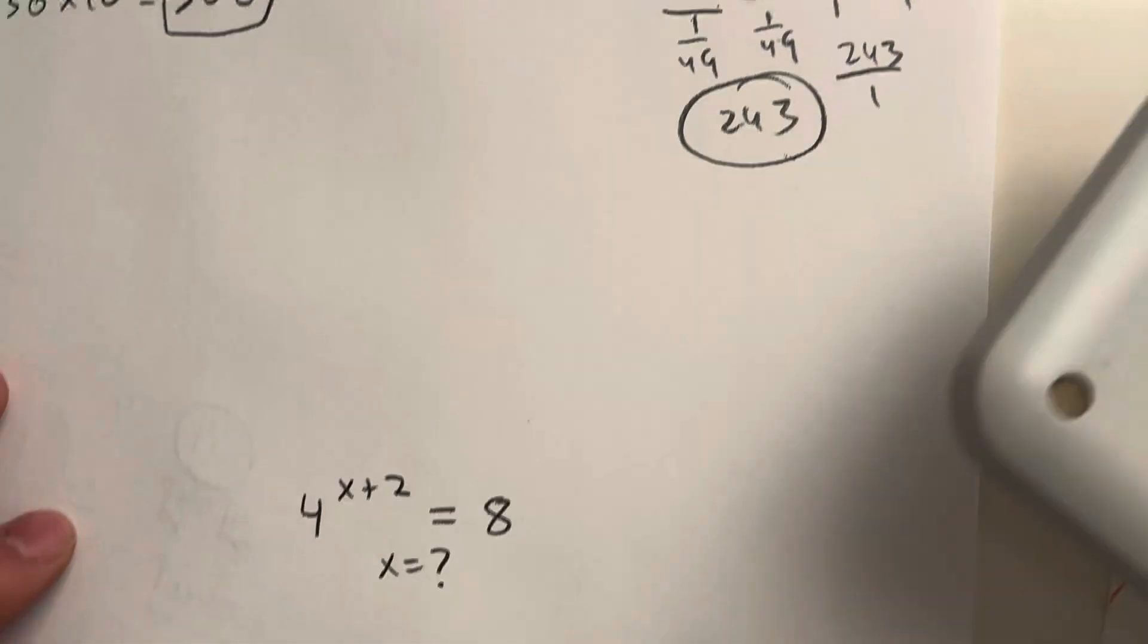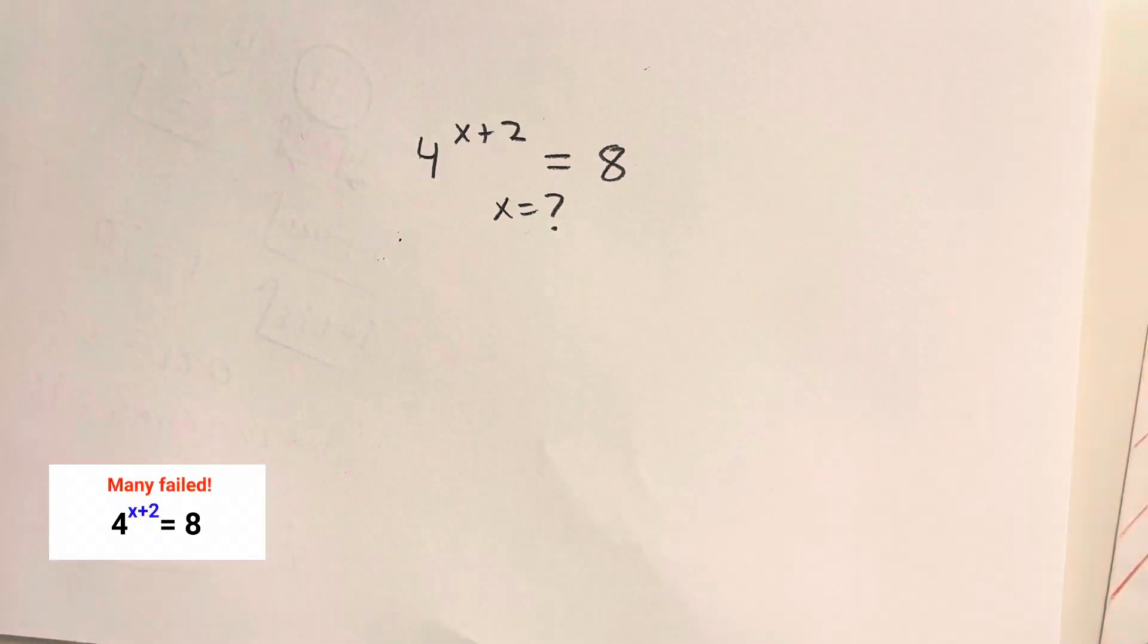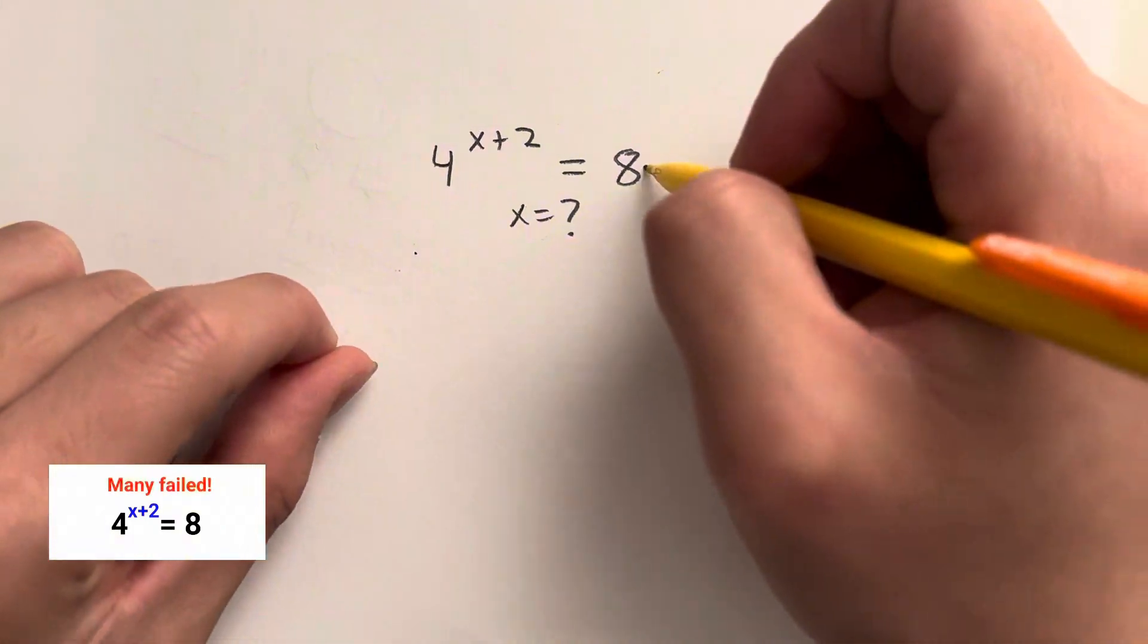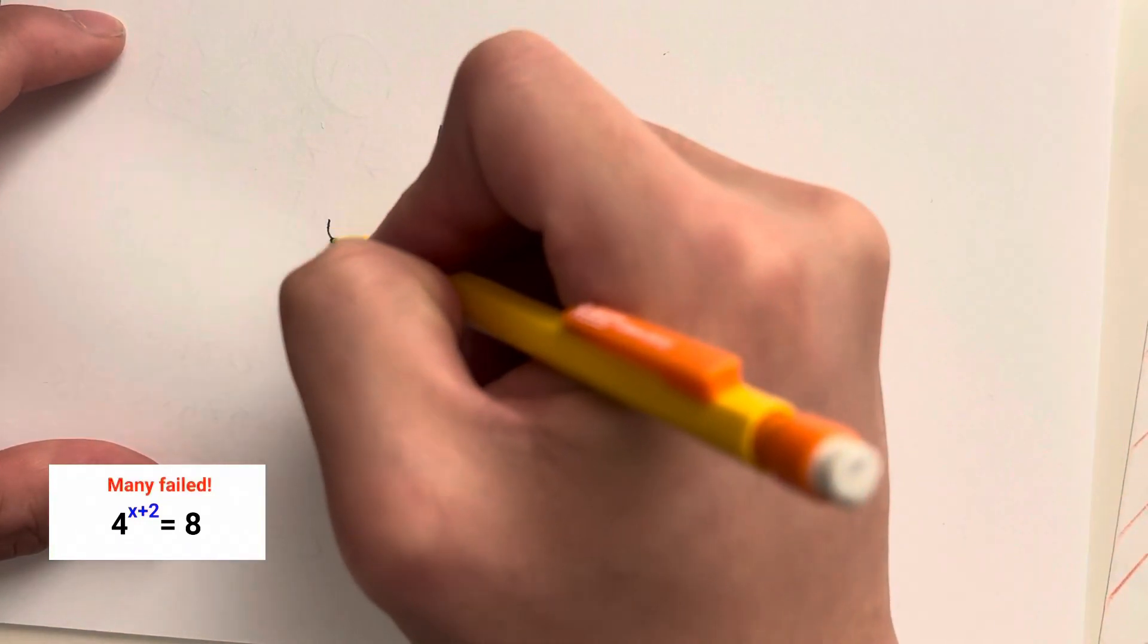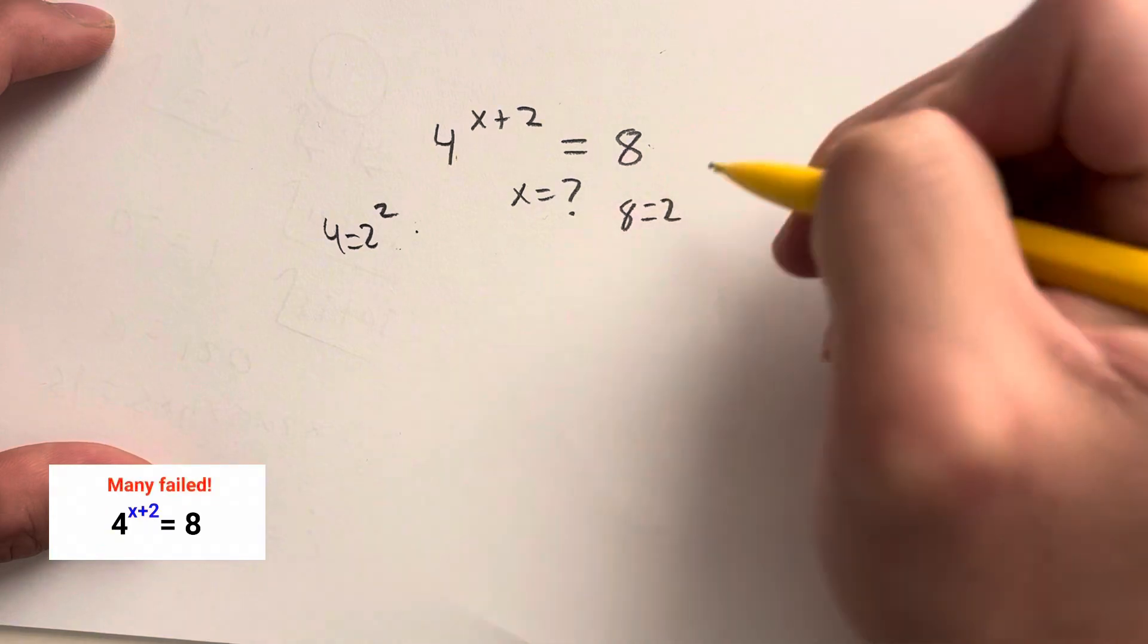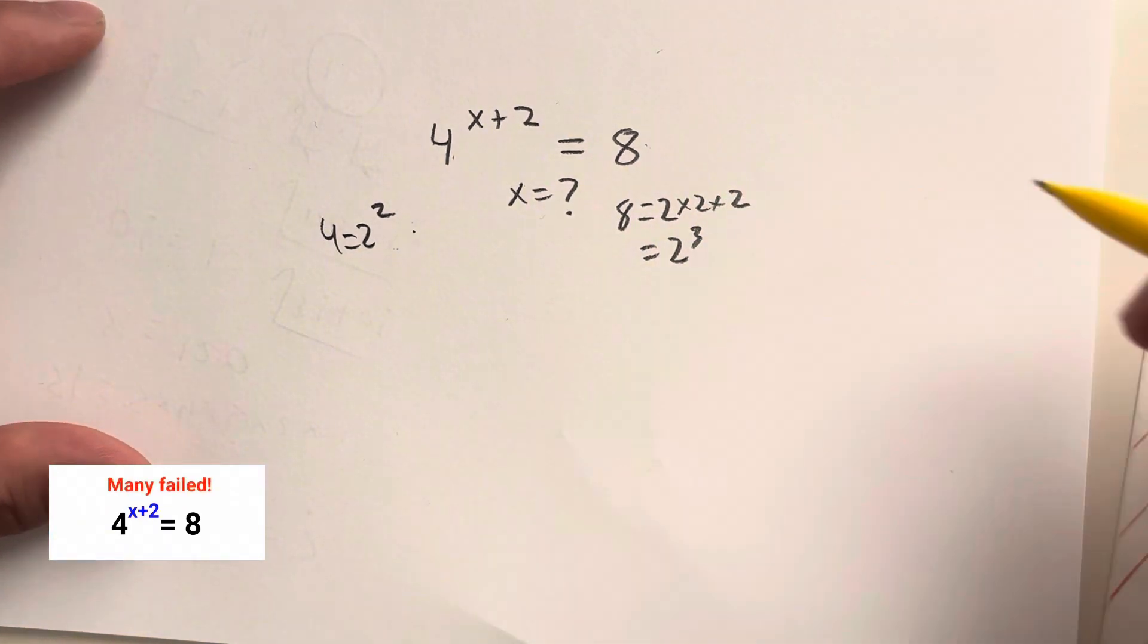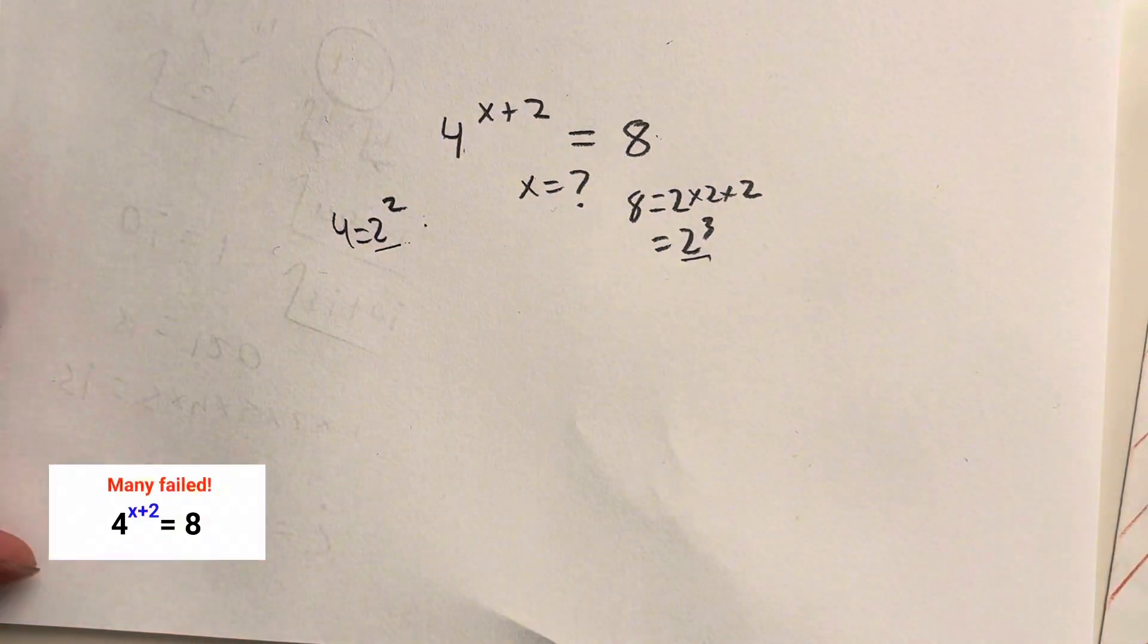And lastly, we go on to our last question, which is 4 to the x plus 2 is equal to 8. Now, how do we solve this? Whenever you see exponents, the idea is that we have to convert it to a common base. So 4, I know, is equal to 2 to the second power, and 8 is 2 to the what power? That's 2 times 2 times 2, which is just equal to 2 to the third power. And once you figure out that we're working with base 2, this question becomes a lot easier.